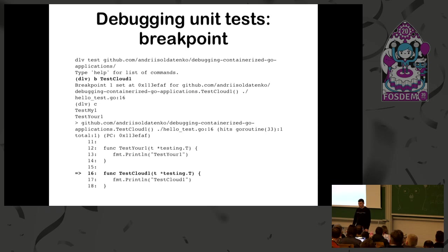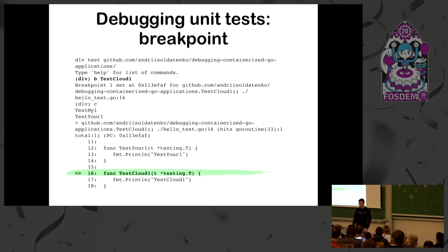You can also set a breakpoint by function name. I don't have it in my slides, but you can use some shortcuts in Delve - like 'funcs'. It will print all functions, and you can use wildcards to find your function and then debug it.